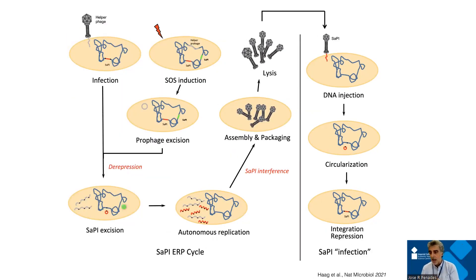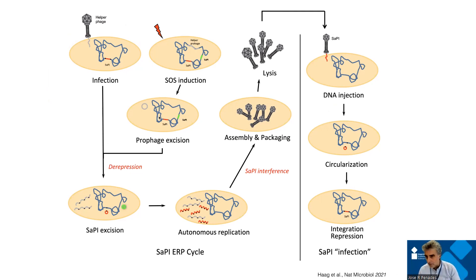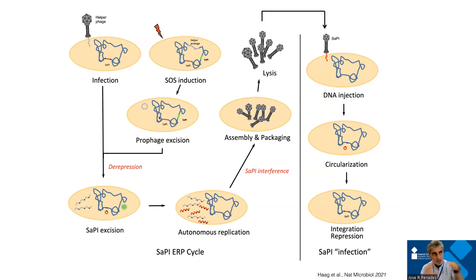The process is even nicer because we published last year that a strain can have two SaPIs, and some SaPIs are induced not by the phage but by the other SaPI — three levels of parasitism: the phage inducing one SaPI, and that SaPI inducing the other SaPI, again moving at very high frequency. We need to remember that this mobility always involves important virulence factors that we can promote with antibiotic treatment.